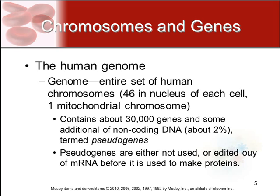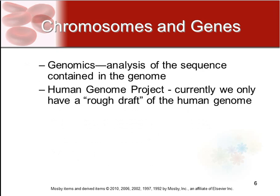Pseudogenes are either ones that are not used, or edited out by RNA before they're used to make proteins. There is genomics, which is the analysis of a sequence contained in the genome, and also the Human Genome Project, which developed that human genome. It is currently only a rough draft, as genetics are still being studied frequently for further and better understanding.